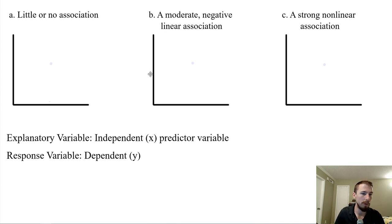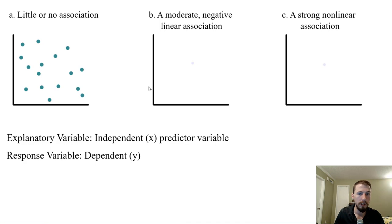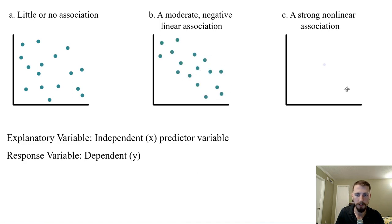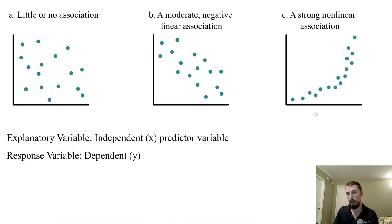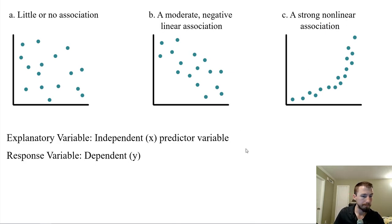To graph weak or no association, it would just be kind of random all over the place. A moderate negative linear association would be going down but not super tight together. And a strong non-linear association would be curved in some way — I showed it curving upward, though they didn't specify positive or negative.